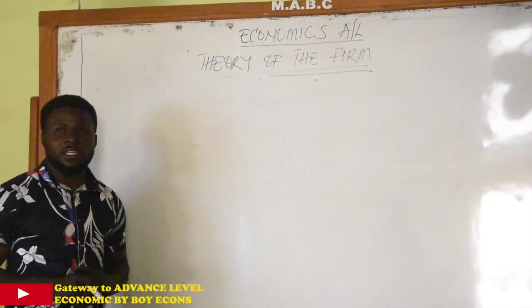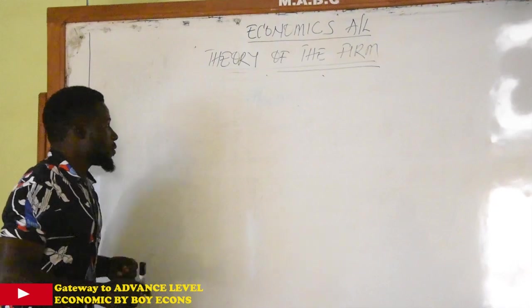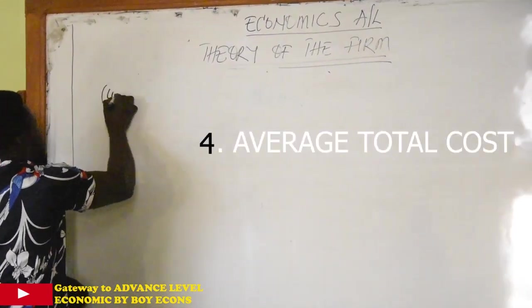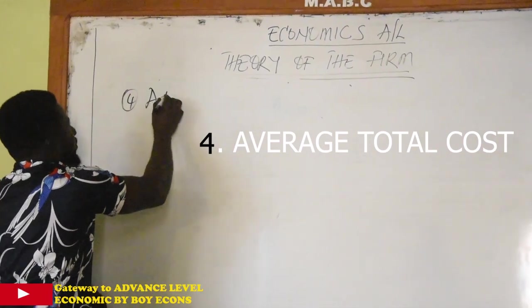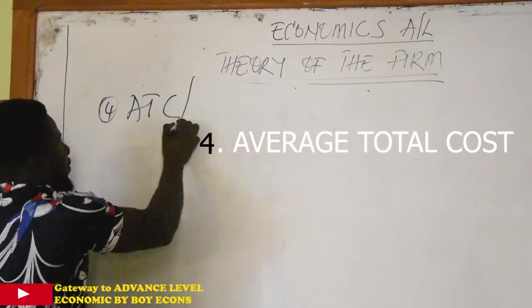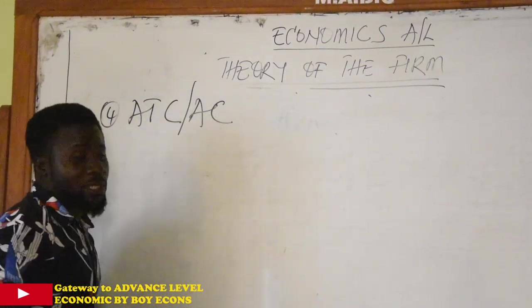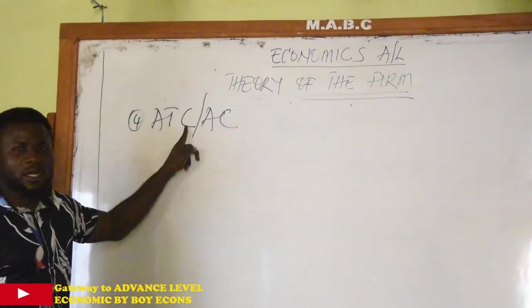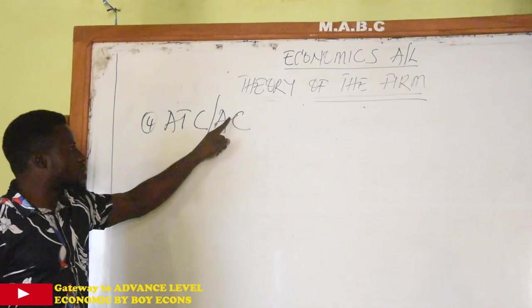Okay, we are going to continue with the fourth item of cost, or the fourth classification of cost, which is average total cost, alternatively called average cost. So ATC stands for average total cost, or average cost, AC. You can call it either way, it is accepted.